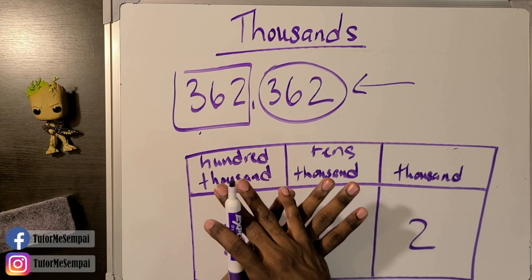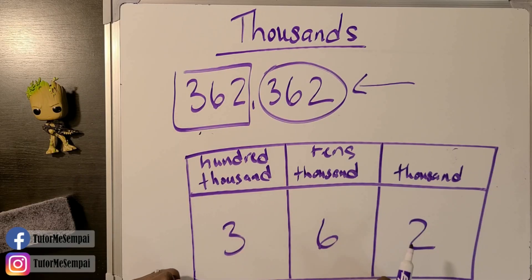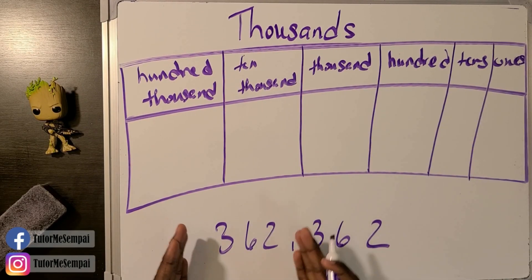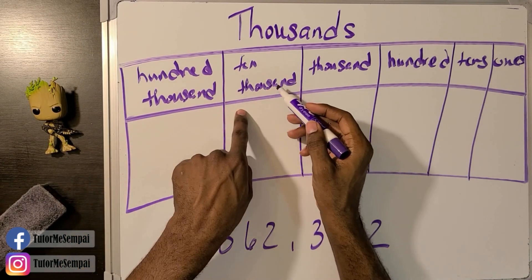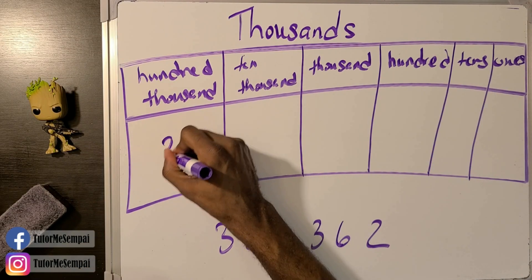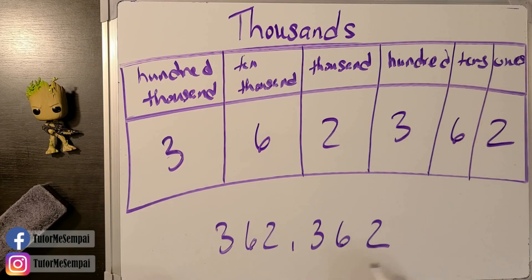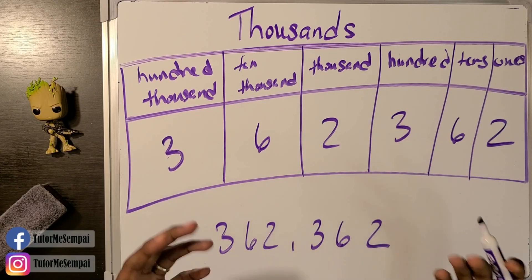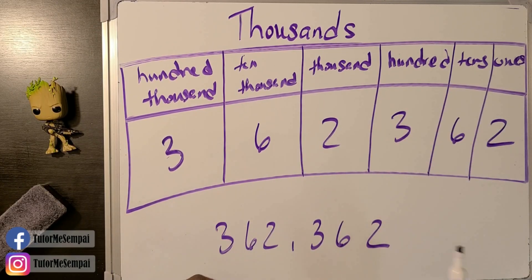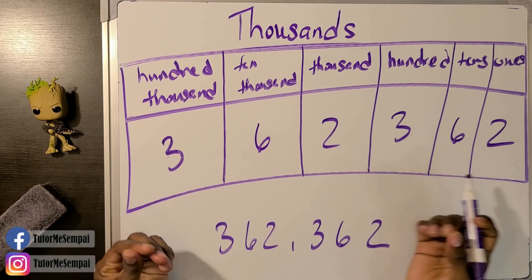Putting it all together for our six-digit number, the full place value chart has: hundred thousands, ten thousands, thousands, hundreds, tens, and ones. To fill it in, quite literally write the number as it is: 3, 6, 2, 3, 6, 2. Understanding what this number represents makes the place value chart much easier to work with.